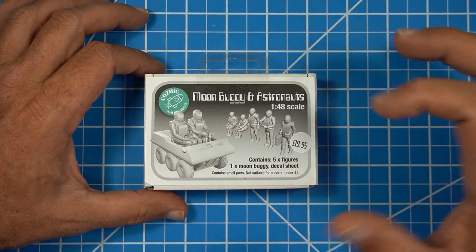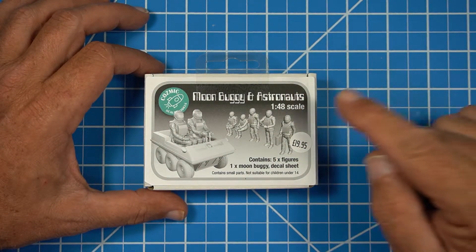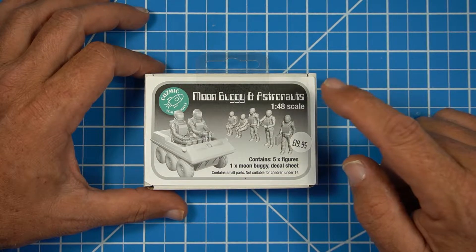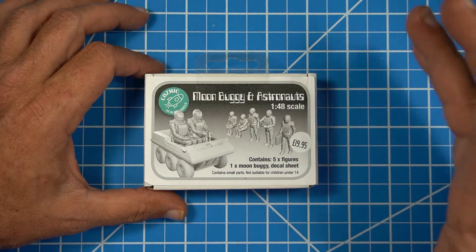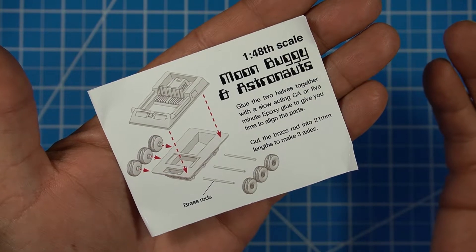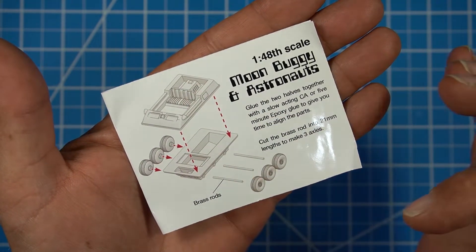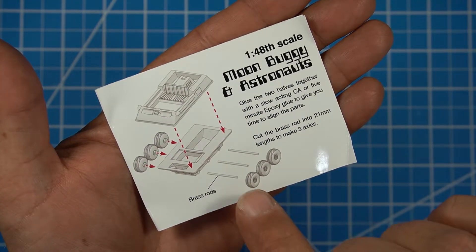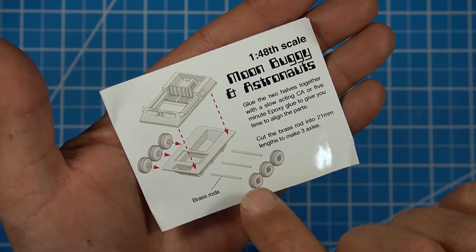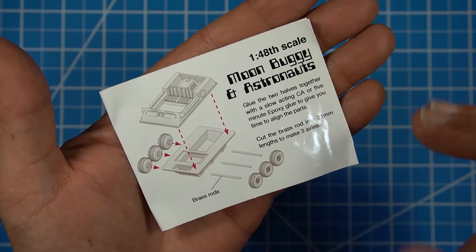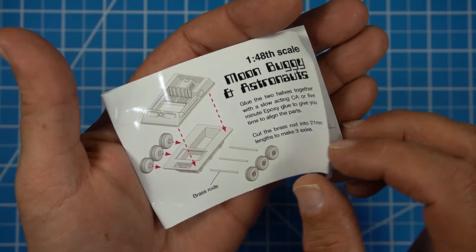We have two different sets of the moon buggy and astronauts to show you. This one is in 1/48 scale. It comes with the moon buggy, five figures and a decal sheet. We'll go over the instruction sheet first. It shows you both halves of the moon buggy, all six wheels and also the brass rod that you'll have to cut down to size to put through the moon buggy to get those to stay. It has the instructions here on how to do that.